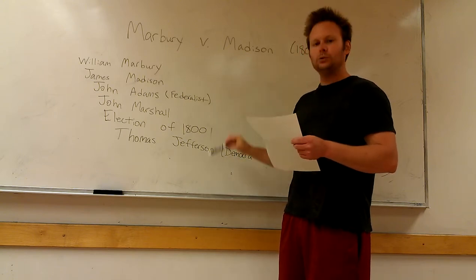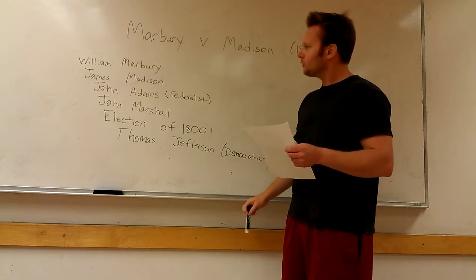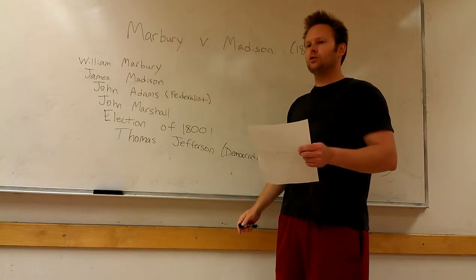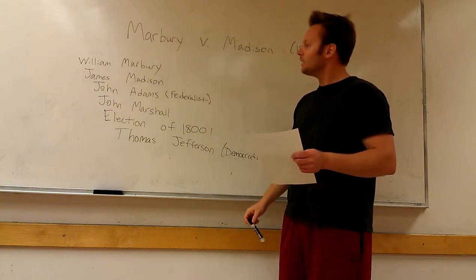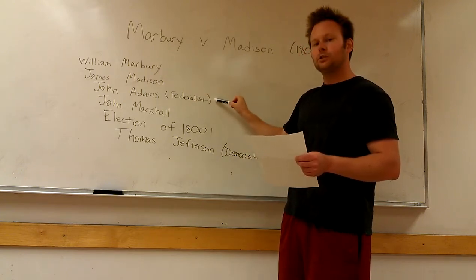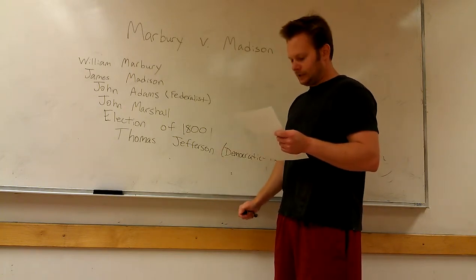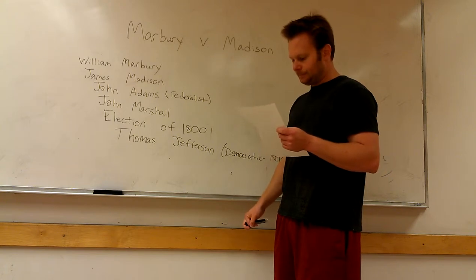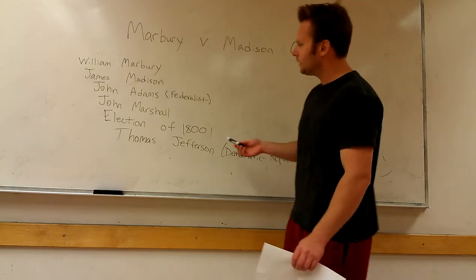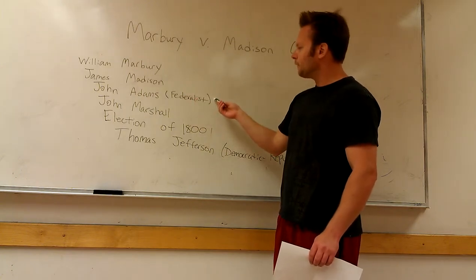The case has to do with the changing of administrations. William Marbury, in addition to quite a few judicial appointees, is given a commission by John Adams, the Federalist administration who's leaving. In 1800, Thomas Jefferson wins the election — he's a Democratic Republican. John Adams, who's leaving office, is a Federalist.